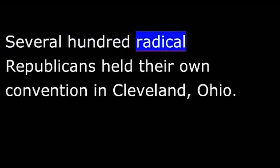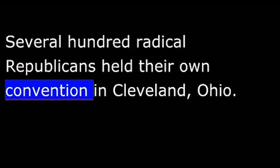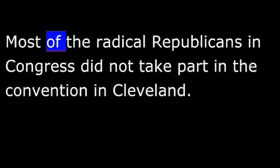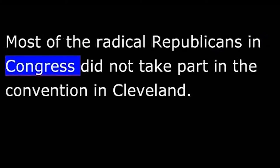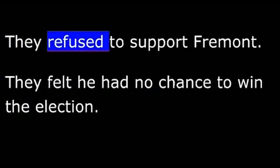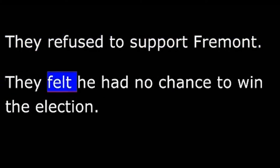Several hundred radical Republicans held their own convention in Cleveland, Ohio. They formed a new political party called the Radical Democracy and nominated explorer John Fremont as their candidate for the national election. Fremont had been the Republican presidential candidate eight years earlier. Most of the radical Republicans in Congress did not take part in the Cleveland convention. They refused to support Fremont, feeling he had no chance to win the election.